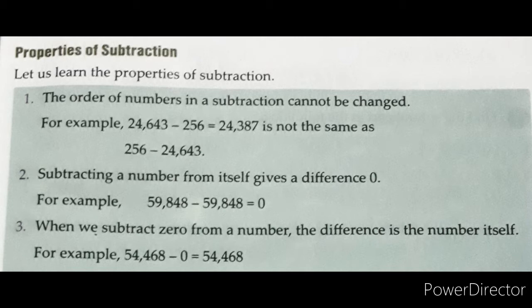Number 3. When we subtract 0 from a number, the difference is the number itself. When we subtract 0 from any digit, our difference is the number itself — that same number comes. For example, 54,468 − 0, then we get 54,468; the number itself is the answer.